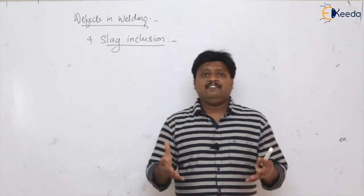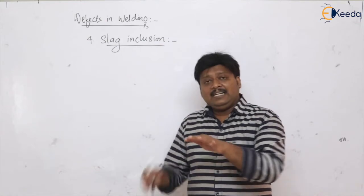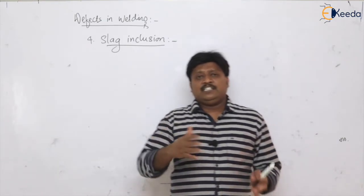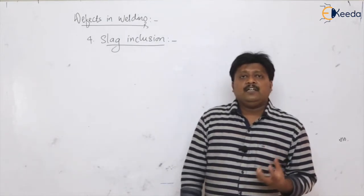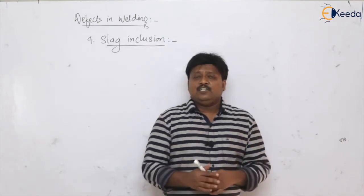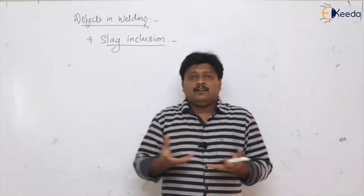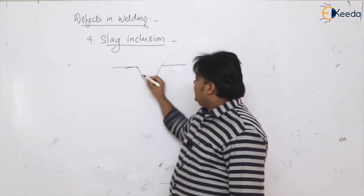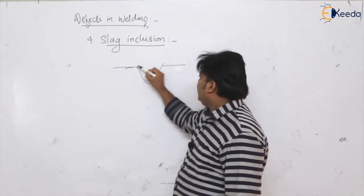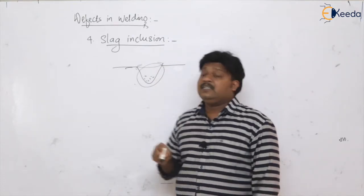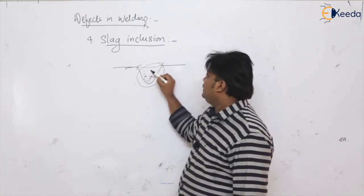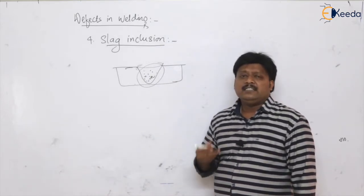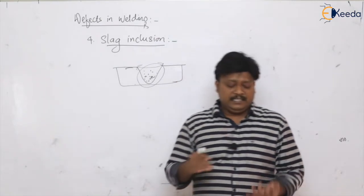The flux reacts with impurities in the molten material to form slag, which floats onto the weld pool. After solidification you can chip off this slag. But when a high intensity arc is present, the arc forces this floating slag to the bottom of the weld pool. If solidification occurs before the slag can float back out, it becomes entrapped, causing slag inclusion.